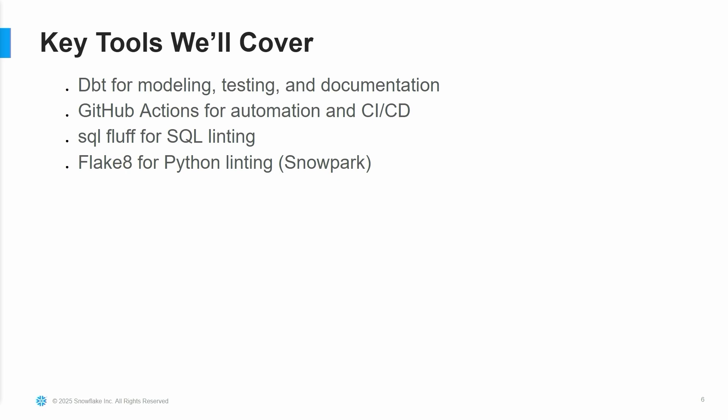The key tools, as I mentioned — this is mostly covering DBT. In our infrastructure we use DBT for modeling, testing, and of course for documentation, and GitHub Actions for automation and the CI/CD process. And two other little-known tools — if you're really a hardcore developer, I'm pretty sure you should already know: SQL Fluff and Flake8 for Python, especially if you are into ML stuff.